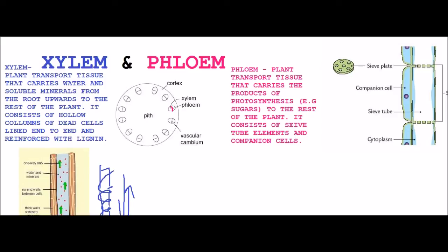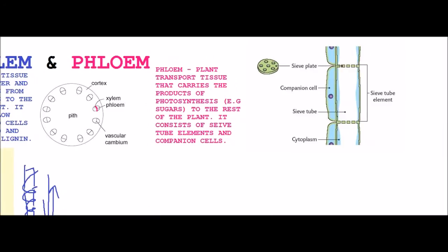The phloem is a plant transport tissue that carries the products of photosynthesis, so we have sugars. The most common sugar you probably will be familiar with is sucrose, to the rest of the plant. It consists of sieve tube elements and companion cells. Let's try and explain that now.